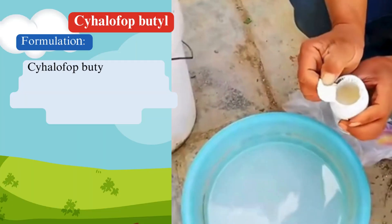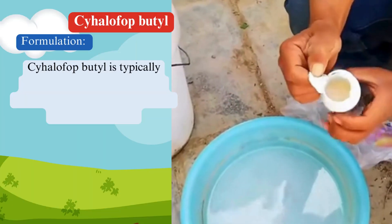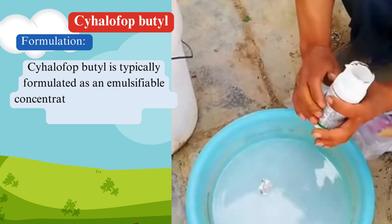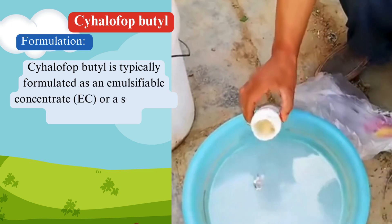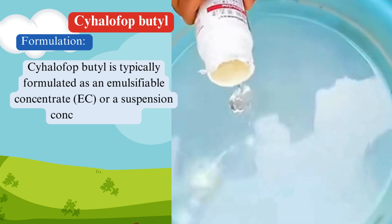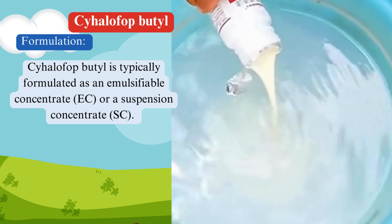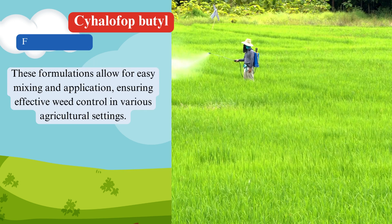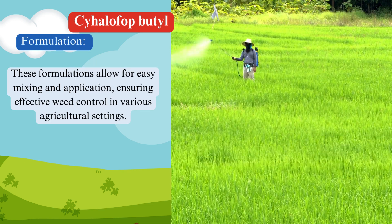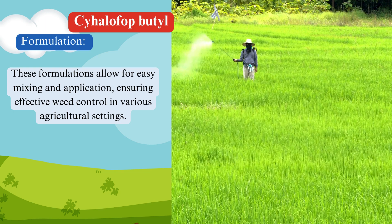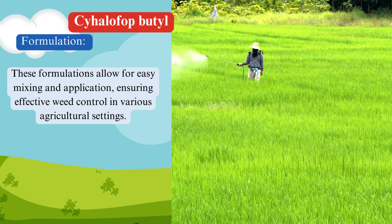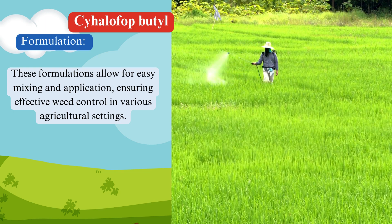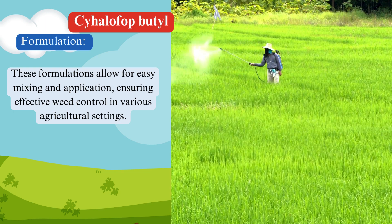Formulation. Cyhalophop butyl is typically formulated as an emulsifiable concentrate (EC) or a suspension concentrate (SC). These formulations allow for easy mixing and application, ensuring effective weed control in various agricultural settings.